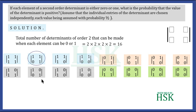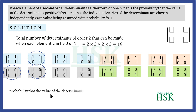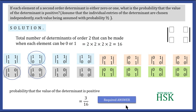We can observe and find that this determinant, this determinant, and this determinant — these 3 determinants — are going to have a positive value. The other determinants will have a value of 0 or −1. So there are 3 favorable determinants, and the probability that the value of the determinant is positive is equal to 3/16, which is the required answer.